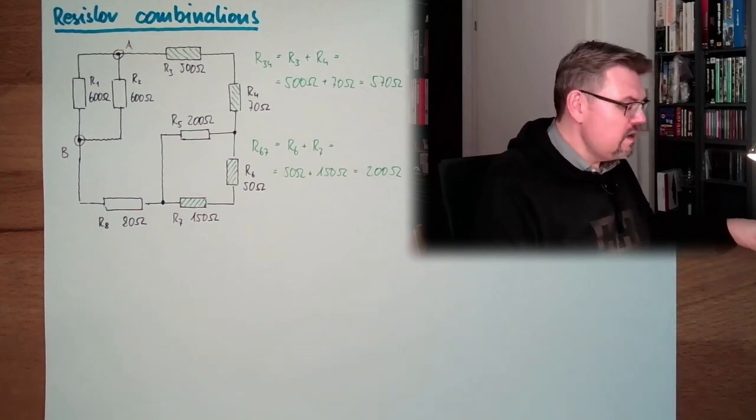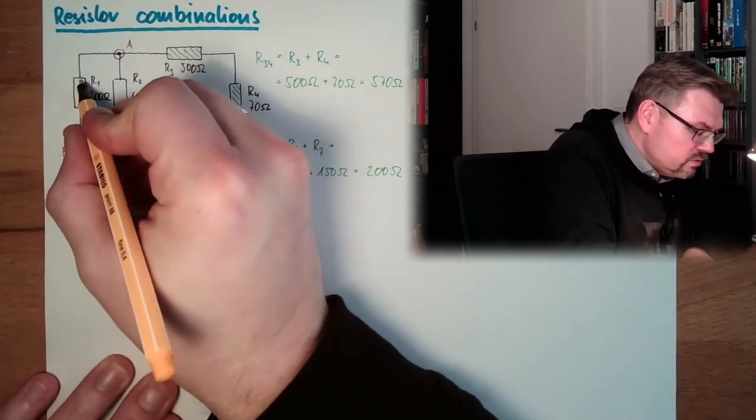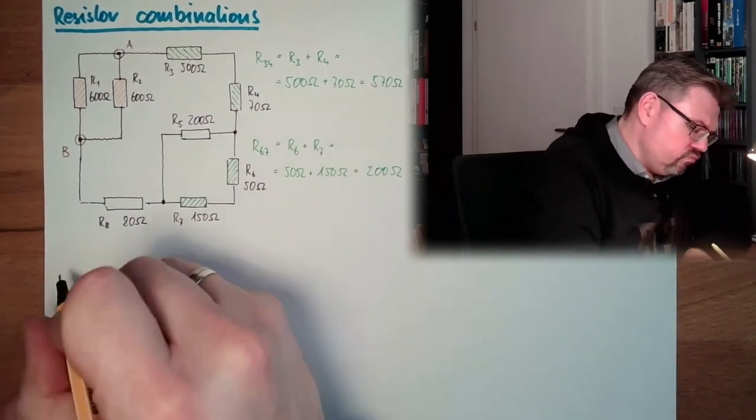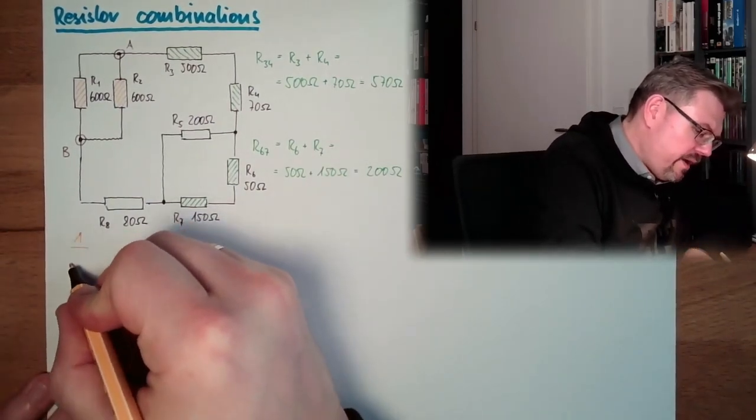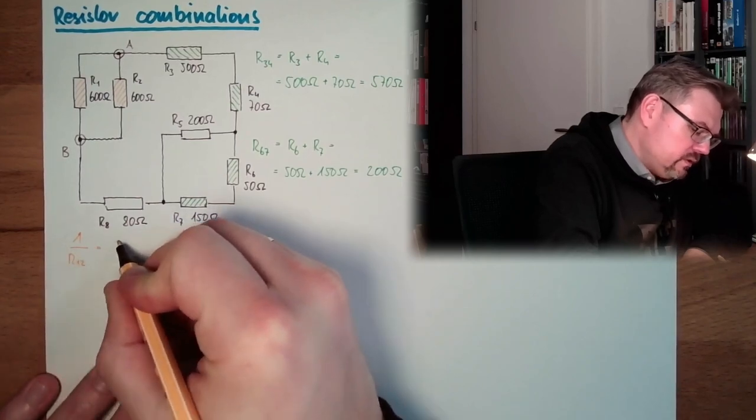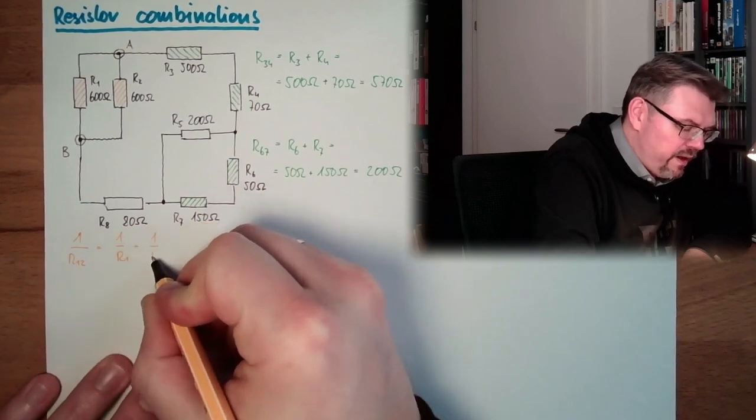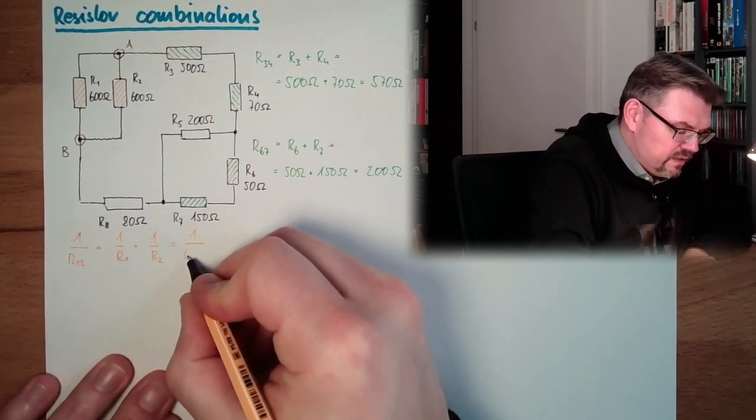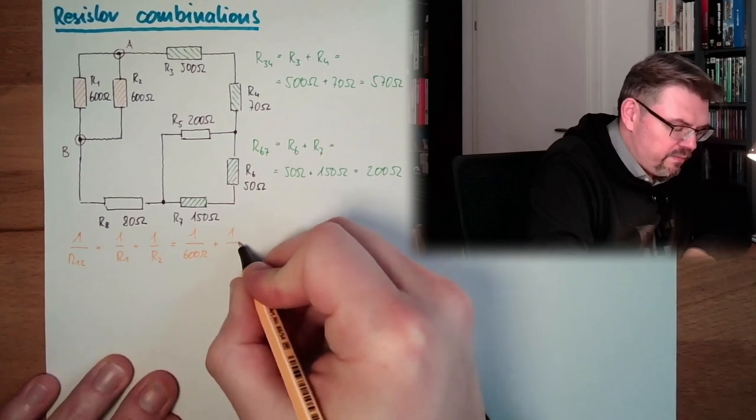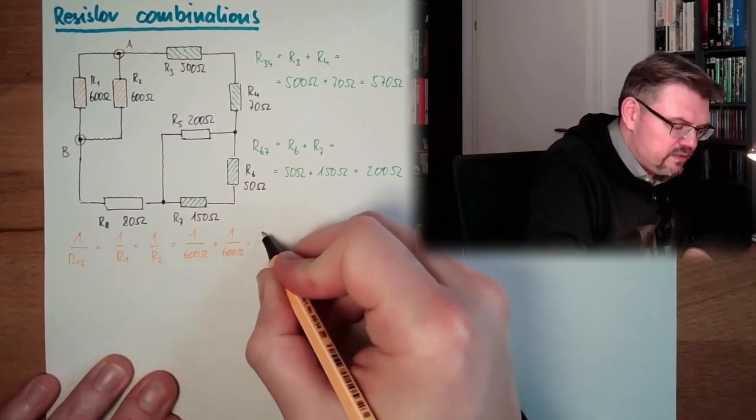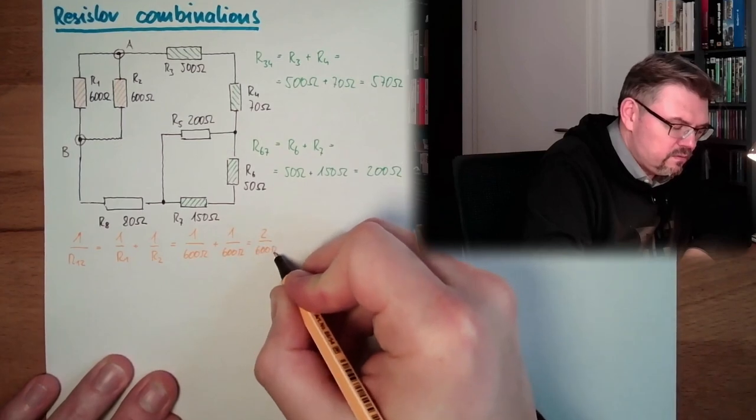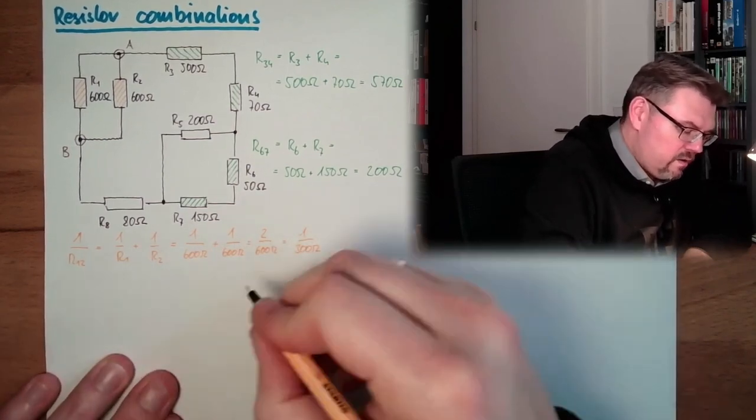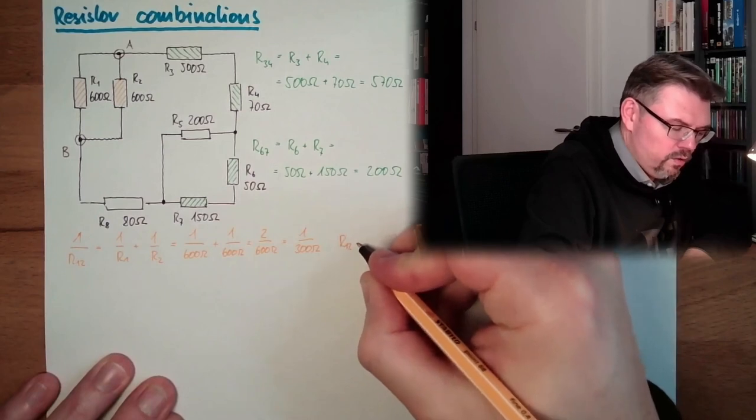I don't see any series connection. However, what I see is here, those two, those are parallel. Let's see, 1 divided by R12 equals 1 divided by R1 plus 1 divided by R2. So this equals 1 divided by 600 ohms plus 1 divided by 600 ohms. This is 2 divided by 600 ohms. This is 1 divided by 300 ohms.